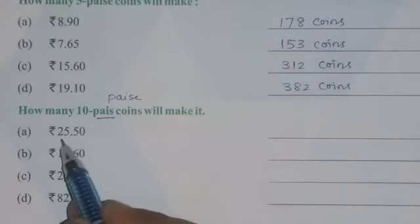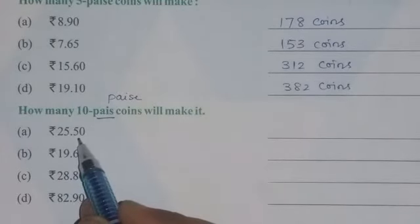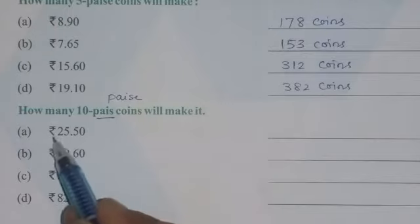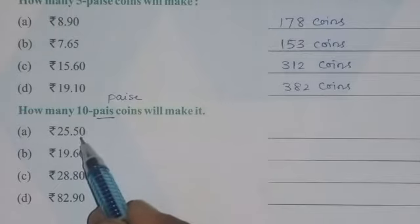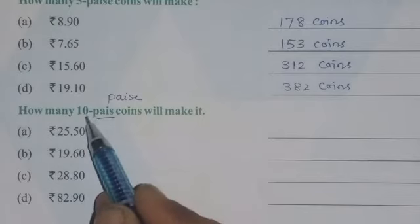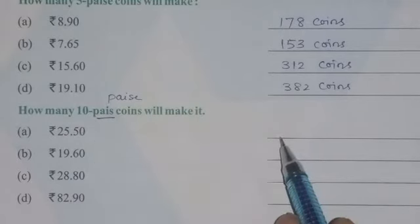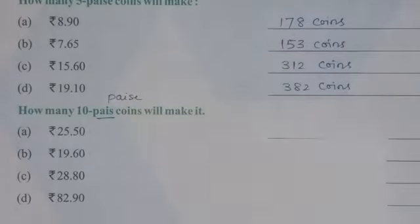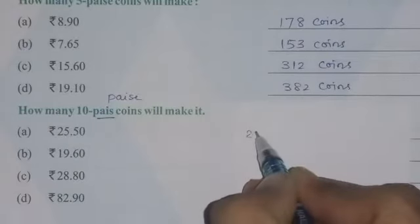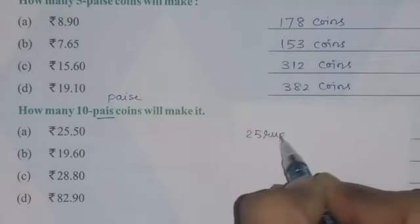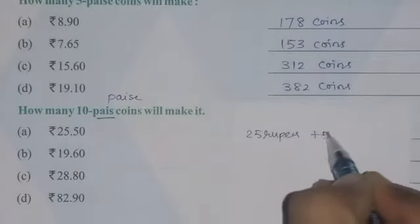How many 10 paise coins will make rupees 25 and 50 paise? Same type of question — we have to first convert the complete amount into paise, then divide by 10 to get the answer. So the number is given: 25 rupees and 50 paise. First, 25 rupees equals 2500 paise, plus 50 paise.